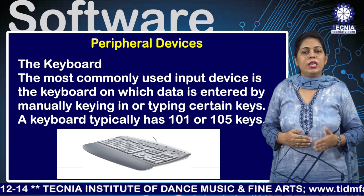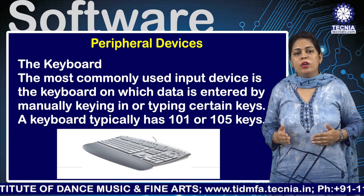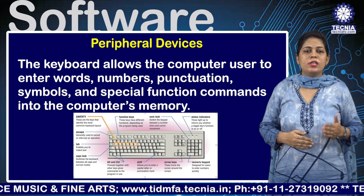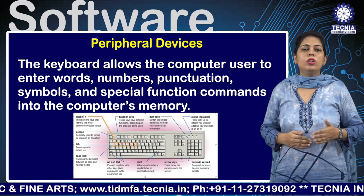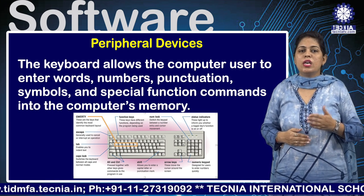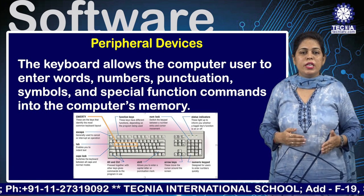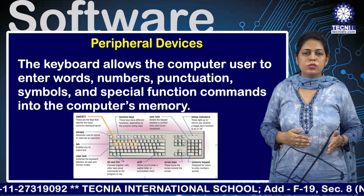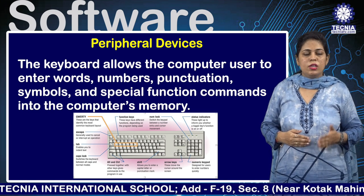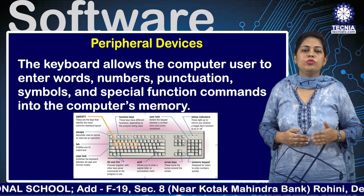A keyboard typically has 105 or 101 keys, as shown in the diagram. The keyboard is divided into sections: numerical keys, alphabetical keys, special keys, and miscellaneous keys. The keyboard allows the user to enter words, numbers, punctuation, symbols, and special function commands into the computer's memory.